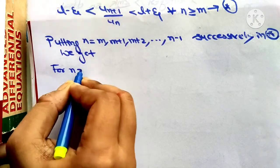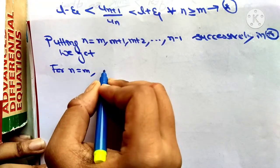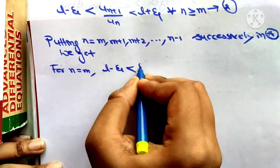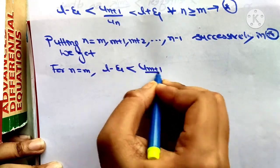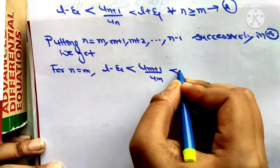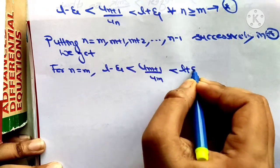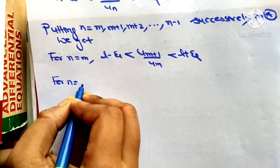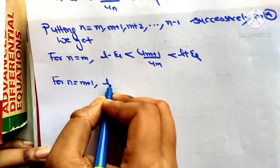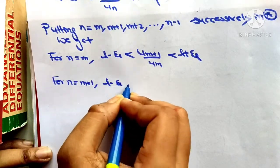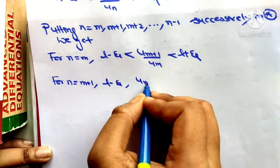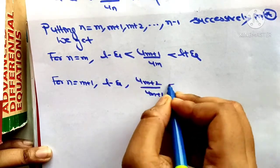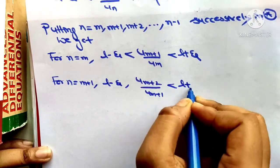For n equal to m: l minus epsilon less than a_{m+1} / a_m less than l plus epsilon. For n equal to m+1: l minus epsilon less than a_{m+2} / a_{m+1} less than l plus epsilon.